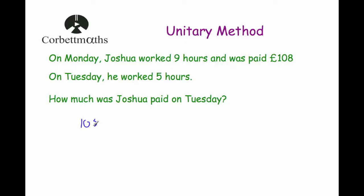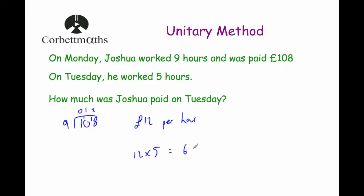108 divided by nine: nine into one doesn't go, remainder one; nine into ten goes once, remainder one; nine into eighteen goes two. So Joshua is paid £12 per hour. On Tuesday he worked five hours, so we multiply £12 by five. 12 times five is 60, so Joshua is paid £60 on Tuesday.